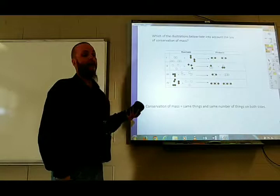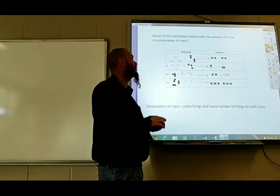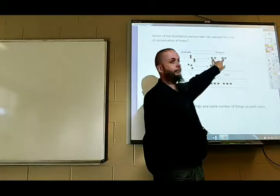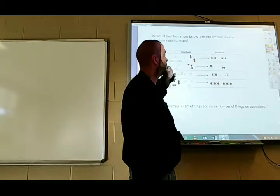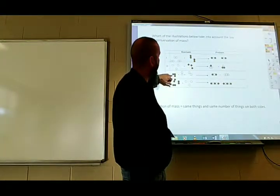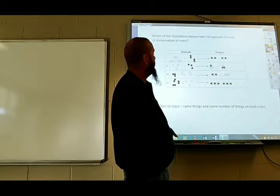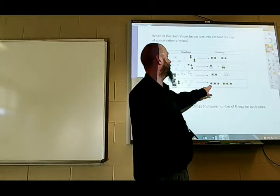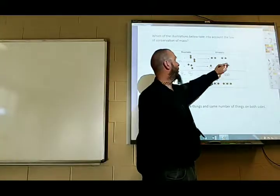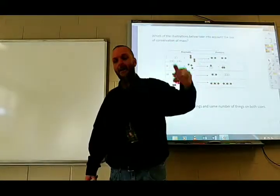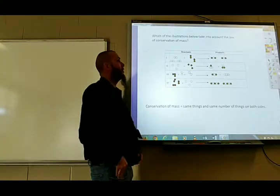Conservation of matter says matter can't be created or destroyed. The mass of the reactants has to equal the mass of the products — meaning the same atoms on both sides. One diagram is wrong because it has six white circles on the reactant side but only two on the product side — that's destruction of matter. Another has three blacks on one side but only two on the other. Another has three white circles on the reactant side but four on the product side — that's creating matter. The correct answer has three white ones and three black ones on each side. The study guide says you need to use a particle diagram to recognize conservation of matter.